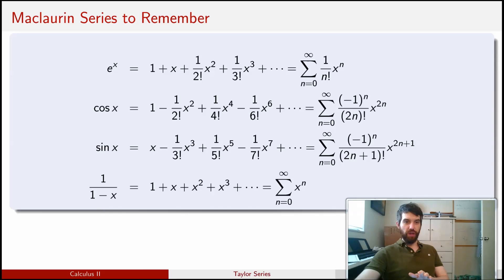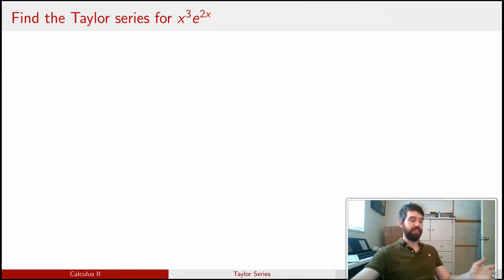So the main point of this video is how we can use these canonical Taylor series to come up with a Taylor series for other functions. For example, take x³e^(2x). One of the things that we know right off the bat is that e^x is one of our standard forms. So I can write this as the sum from 0 to infinity of x^n divided by n factorial.